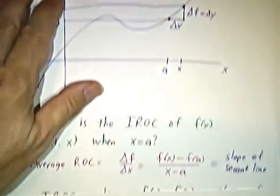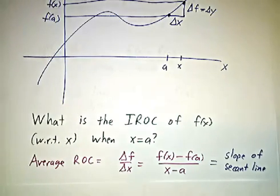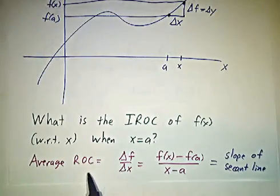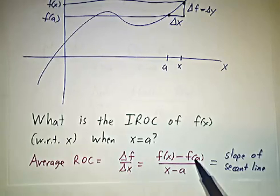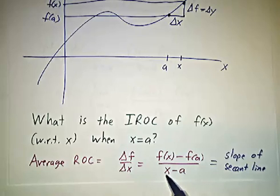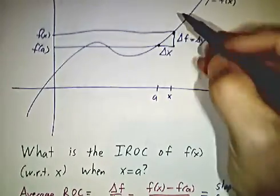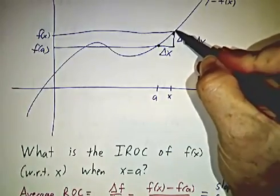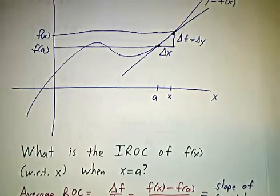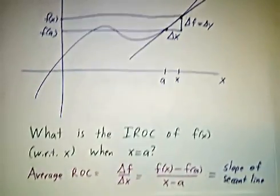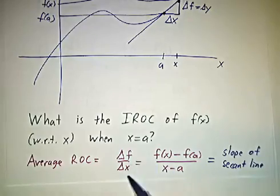And if you want the average rate of change, ROC is rate of change. That's going to be delta f over delta x. Delta f is f of x minus f of a. And delta x is x minus A. And if you like drawing pictures, that's the slope of a line between these two points. You can draw a line between those two points and that's a secant line. And the slope of that secant line is this ratio.